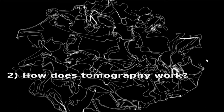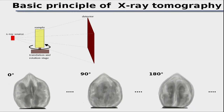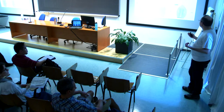Now let's discuss how tomography actually works. The machine takes many radiograms over 360° of rotation — the more images, the better the quality. It assembles a 3D volume where each voxel corresponds to the attenuation coefficient at that point in space. The software to do this reconstruction comes with the machine; you don't need to program it yourself.